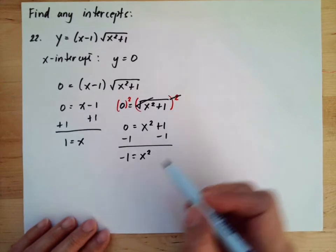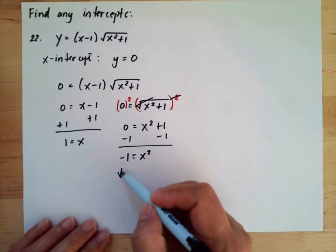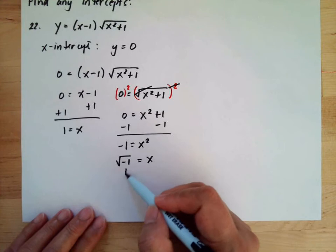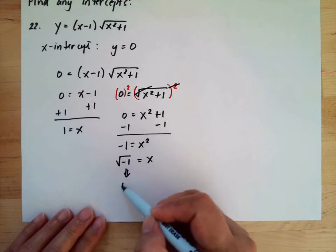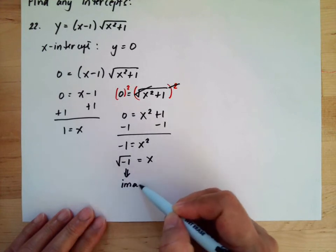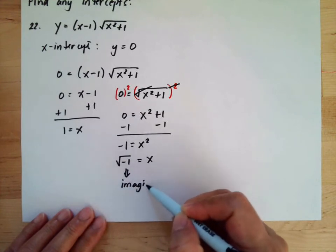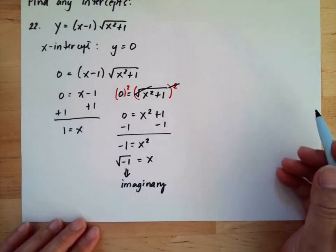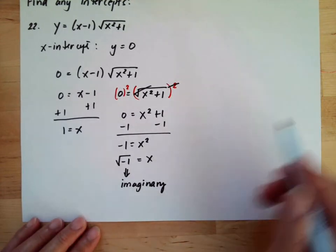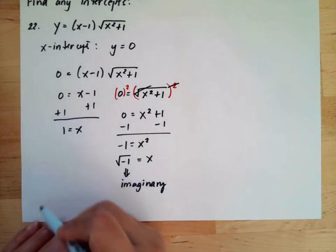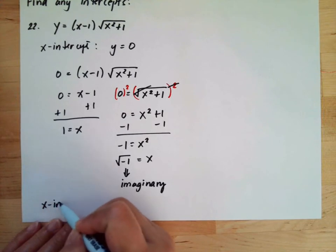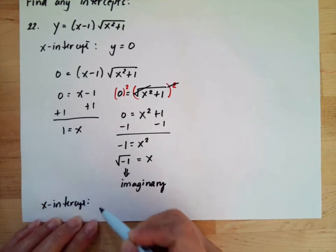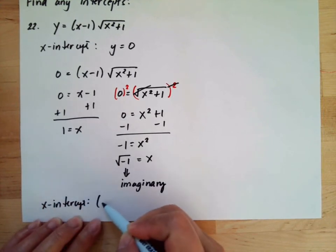Then we take the square root of both sides. The square root of negative 1 equals x. Since this is imaginary, we cannot use this solution. Therefore, the x-intercept is only (1, 0).